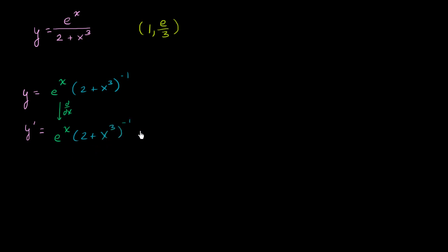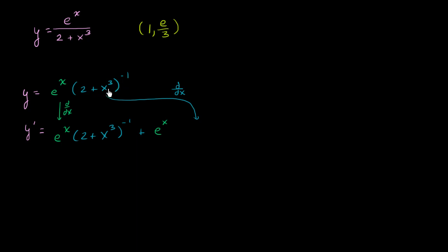And then to that we're going to add e to the x times the derivative of 2 plus x to the third to the negative 1 power. We'll apply the chain rule: the derivative of 2 plus x to the third to the negative 1, with respect to 2 plus x to the third, times the derivative of 2 plus x to the third with respect to x.